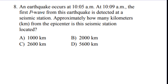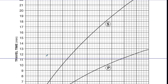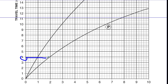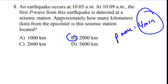Number eight: an earthquake occurs at 10:05. At 10:09, the first P wave is detected. Approximately how many kilometers away is the seismic station? The key is finding that the P wave took four minutes. If the P wave took four minutes, go to four minutes on the chart, find the P wave line — it's about 1,900 kilometers, a little before 2,000. Since they say approximately, you pick the closest answer — B — about 2,000 kilometers.